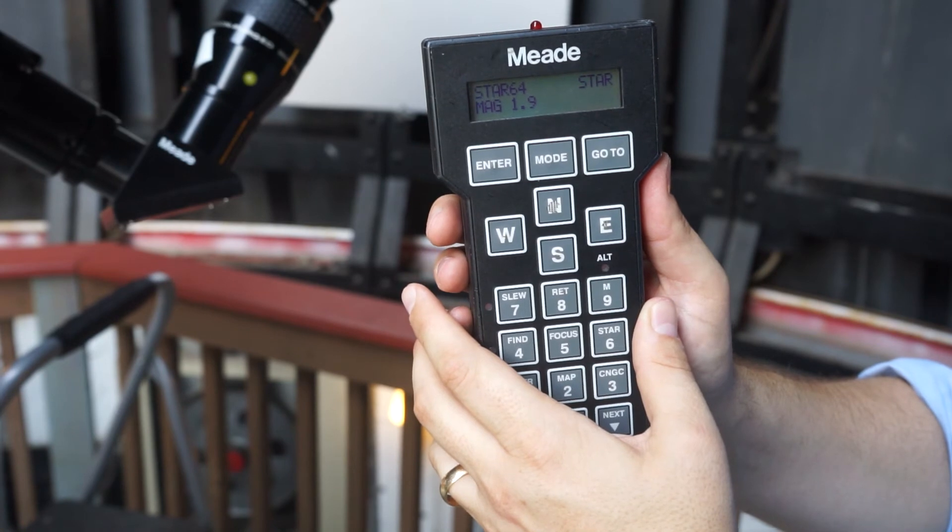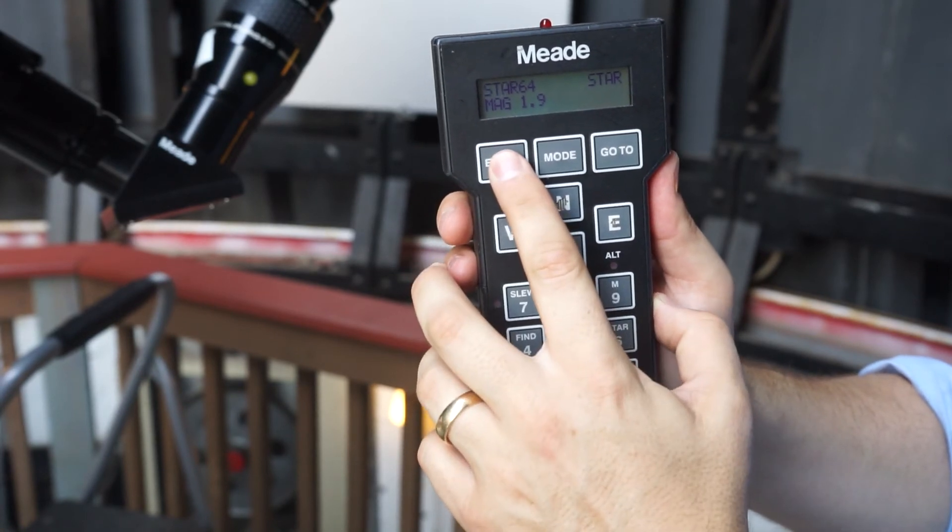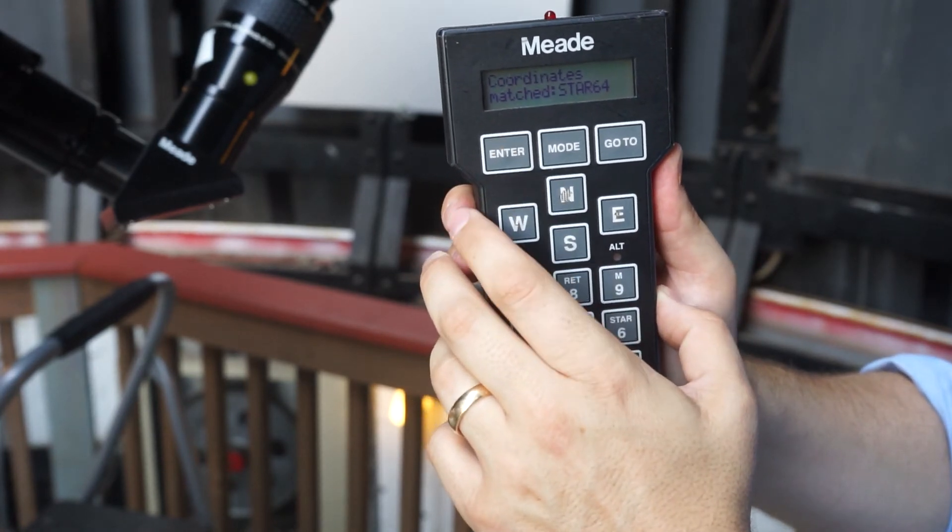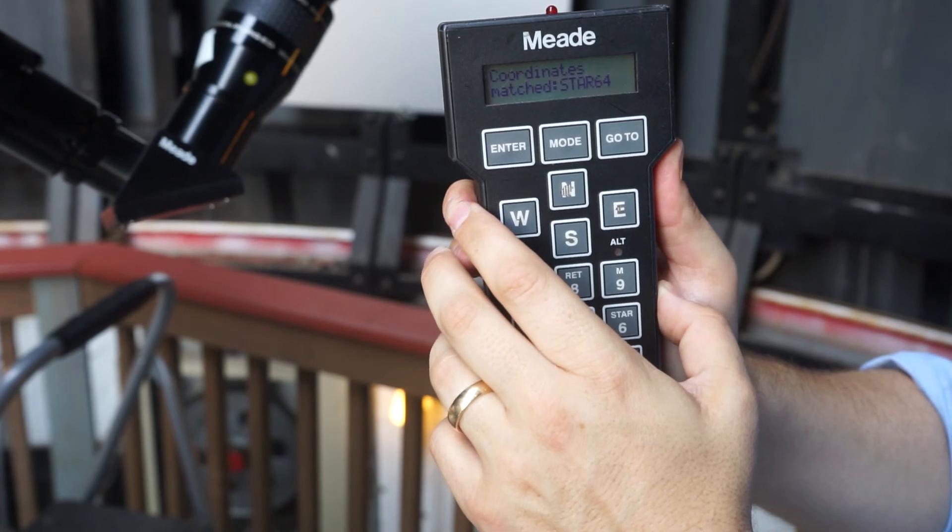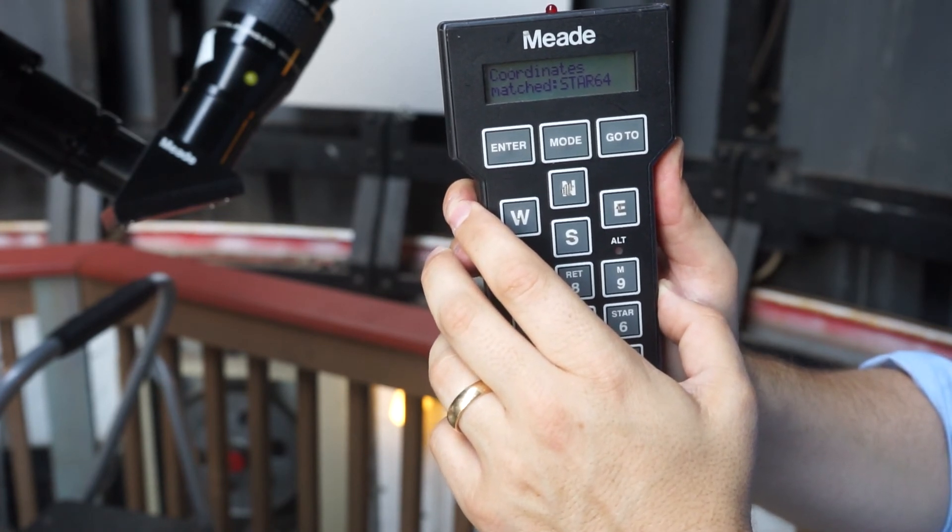Once the star is centered, press enter on the handbox for two seconds to sync the coordinates. Now the telescope knows where it's pointing and you can use the handbox to move to other targets.